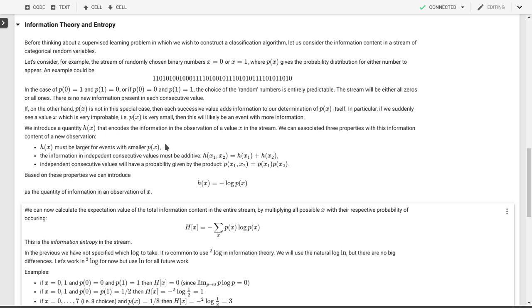We want the consecutive events that are independent, we want those to have information content that is additive. So if I have first x1 and then x2, then the information content in seeing x1 and x2 must be the sum of the information content of seeing x1 first and then x2.